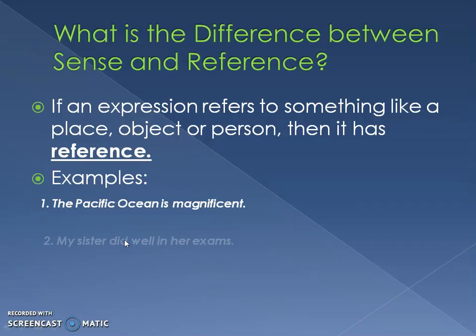Another example: 'My sister did well in her exams.' Here we're referring to a person — we're referring to my sister. We're not just saying any girl; we're referring to a specific person. So again, this sentence has reference.